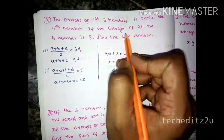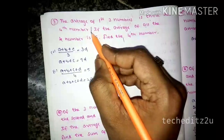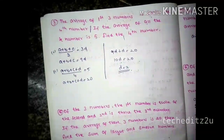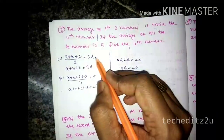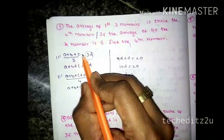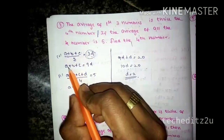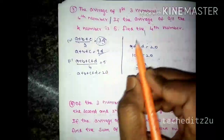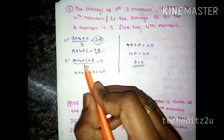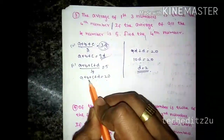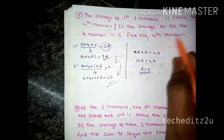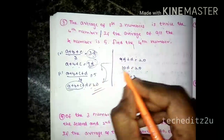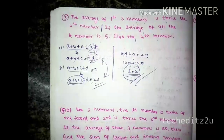The average of all four numbers is 5. Find the fourth number. The average of first three numbers: a plus b plus c divided by 3. The fourth number d: a plus b plus c plus d divided by 4 equals 5, so a plus b plus c plus d equals 20. With a plus b plus c equals 19, we get 19 plus d equals 20, so d equals 1. This is the final answer — the fourth number is 1.